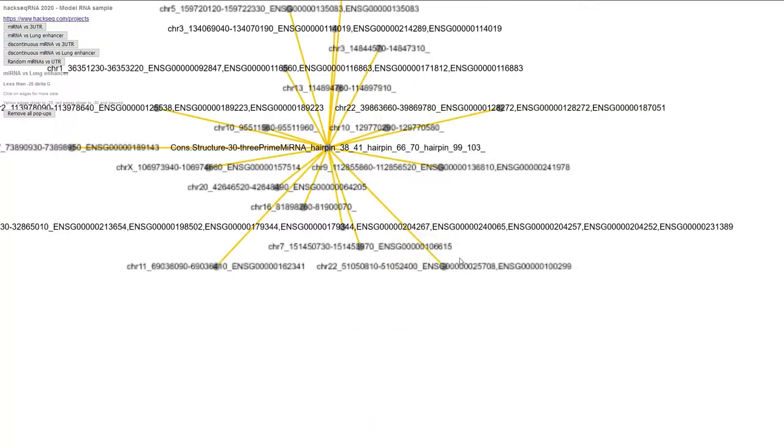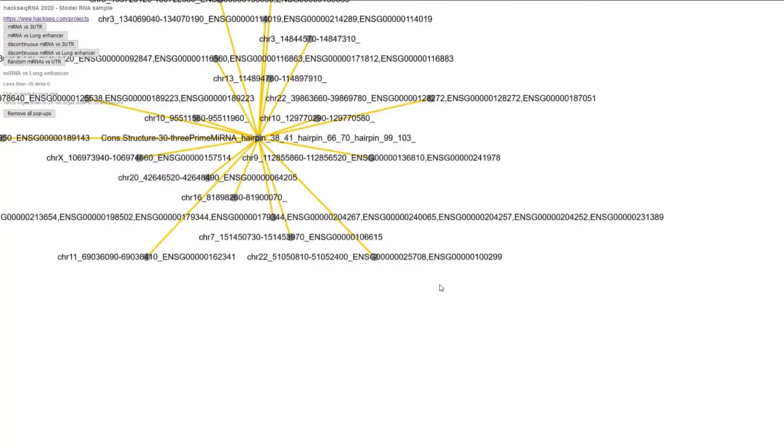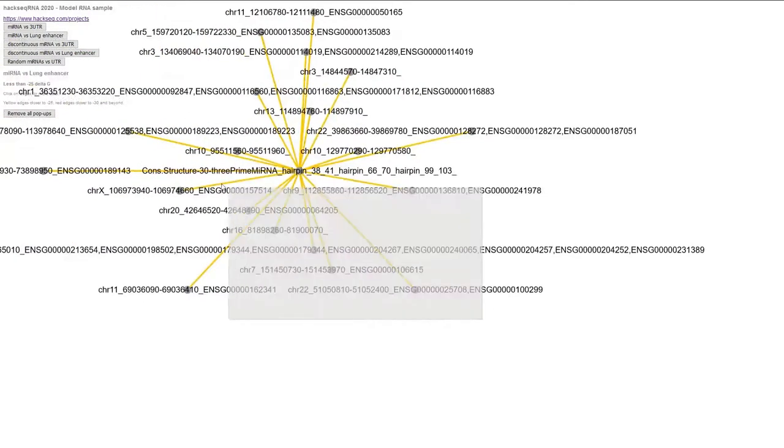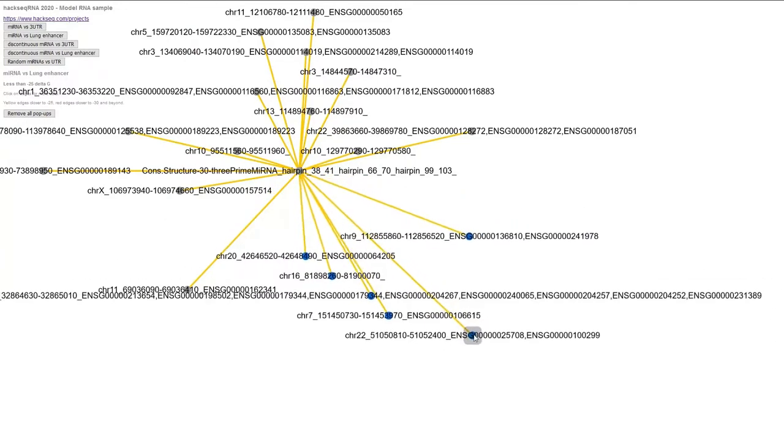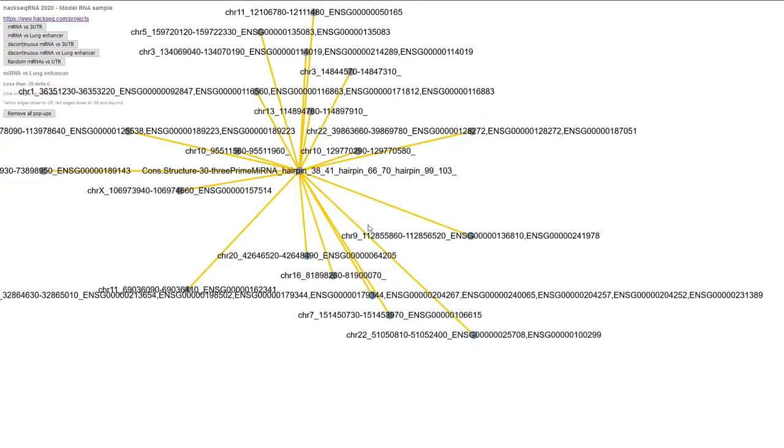We have five of our sample sets here in which we're able to zoom in, zoom out, we can move the graph around, we can move different nodes around, and we can also click on the edges to get some more data, including the delta G number.